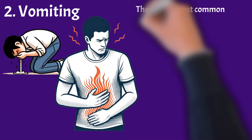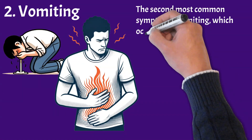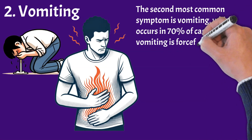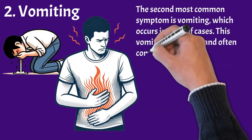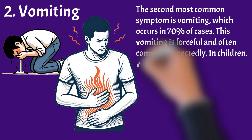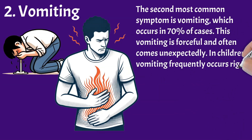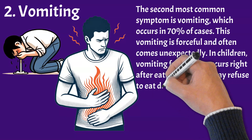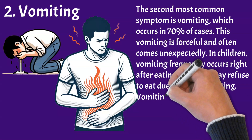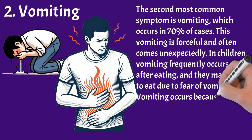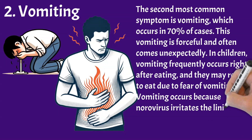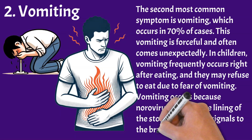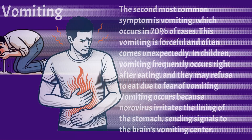The second most common symptom is vomiting, which occurs in 70% of cases. This vomiting is forceful and often comes unexpectedly. In children, vomiting frequently occurs right after eating and they may refuse to eat due to fear of vomiting. Vomiting occurs because norovirus irritates the lining of the stomach, sending signals to the brain's vomiting centre.